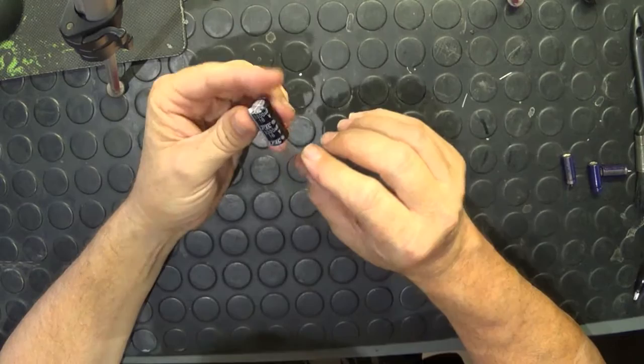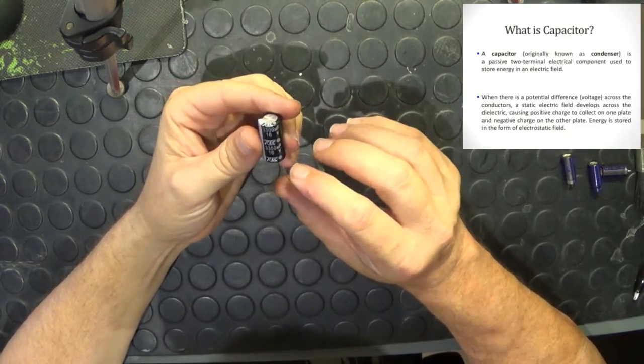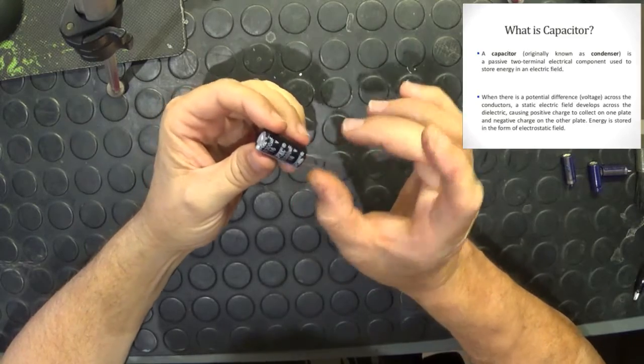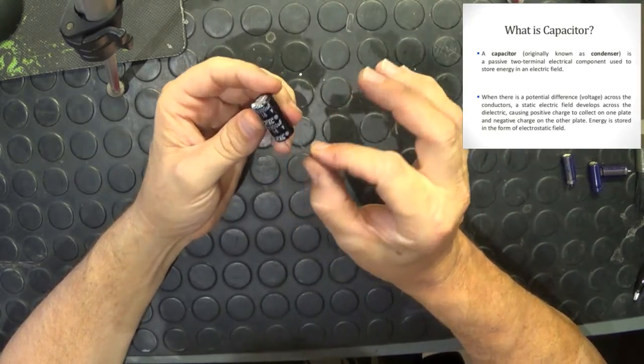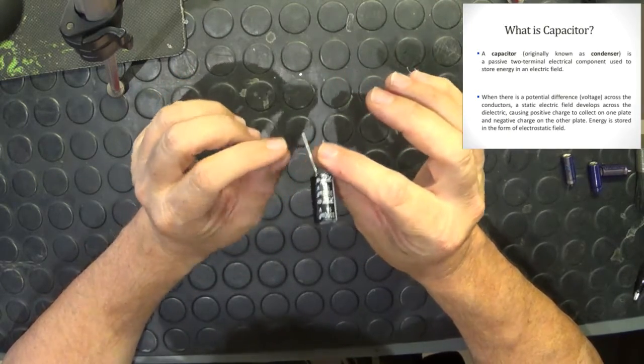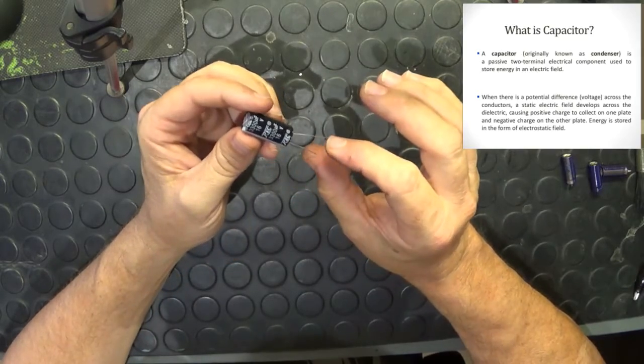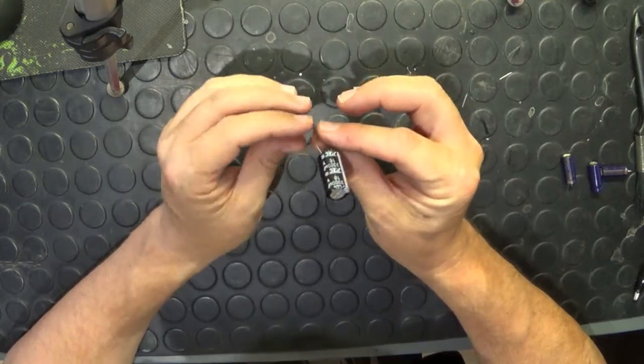Basically, what is a capacitor? Well, in layman's terms, a capacitor is two conductors that are separated by an insulator. Why would you want that? Well, basically you can control the flow of voltage in a circuit.